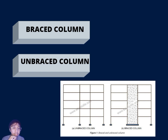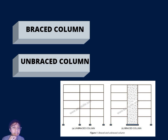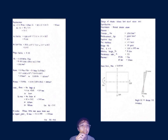In an unbraced structure, resistance to lateral forces is provided by bending in the columns and beams in that plane. The column ends can deflect laterally in an unbraced structure. The axial force and moments in the column are caused not only by the vertical load on the beams but also by the lateral loads acting on the structure and additional moments due to the axial load acting on the deflected column. This is followed by an example of the calculation for the column.